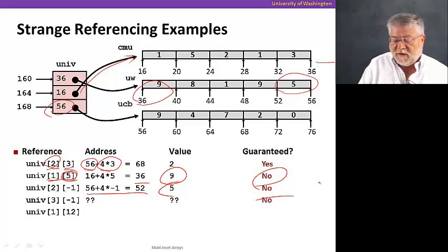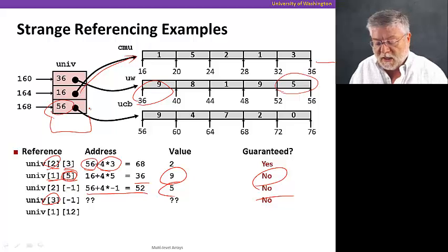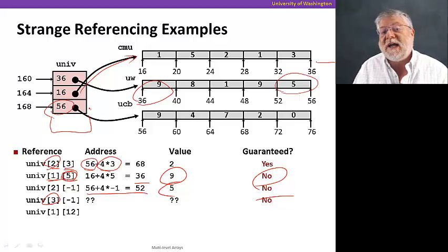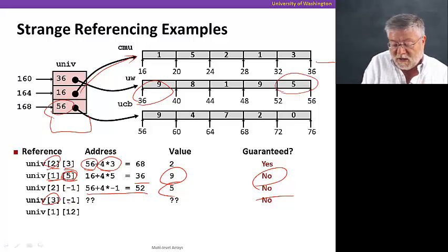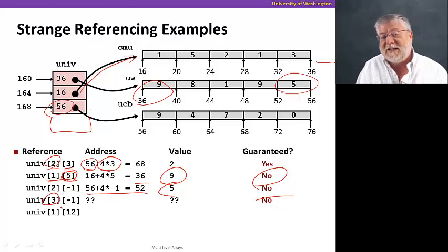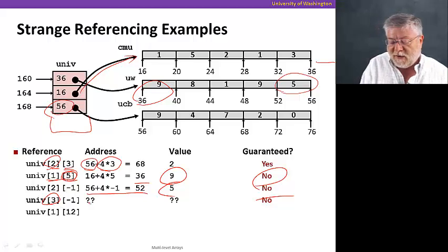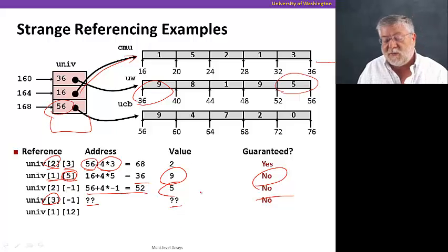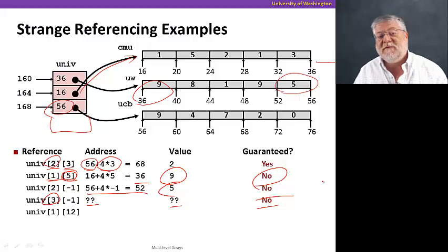Similarly, for this one, we're even going outside of the university array to the next element, where the next element would be. But who knows what's there and what address we'll be reading. That'll take us to some random part of memory. We'll then go four bytes before that because of the minus one. And who knows what's there even. So we have no idea what address it is. We have no idea what value is there, of course.